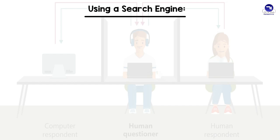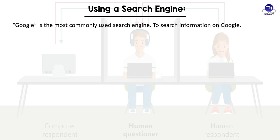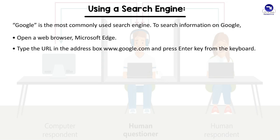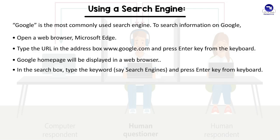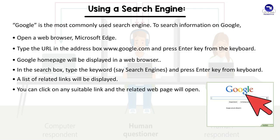Using a search engine: Google is the most commonly used search engine. To search information on Google, open a web browser such as Microsoft Edge, type the URL www.google.com in the address box, and press Enter. The Google home page will be displayed. In the search box, type a keyword — for example, 'search engines' — and press Enter. A list of related links will be displayed, and you can click on any suitable link to open the related web page.